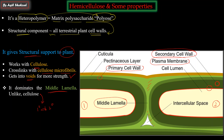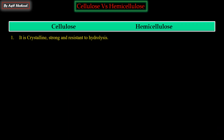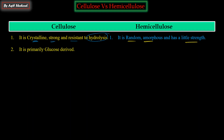There are differences between cellulose and hemicellulose. Cellulose is crystalline in nature - it is strong and resistant to hydrolysis and does not break easily. Hemicellulose, on the other hand, is amorphous - it has no particular crystalline shape, has little strength, and is not as strong as cellulose. Cellulose's primary structure is made up of glucose units, while hemicellulose has different types of sugars - pentoses and hexoses - connected together.